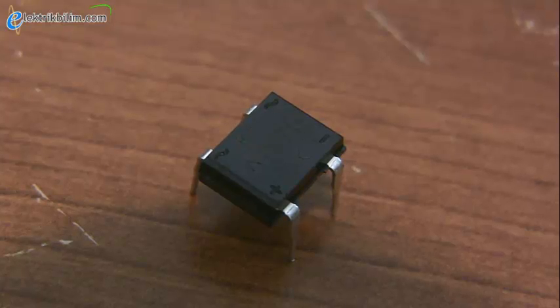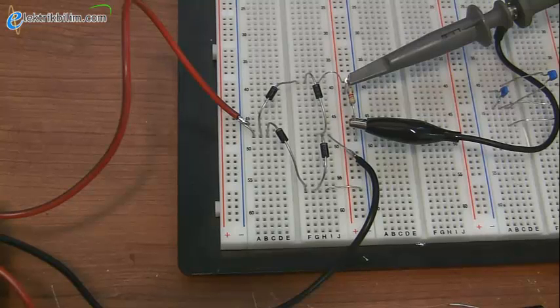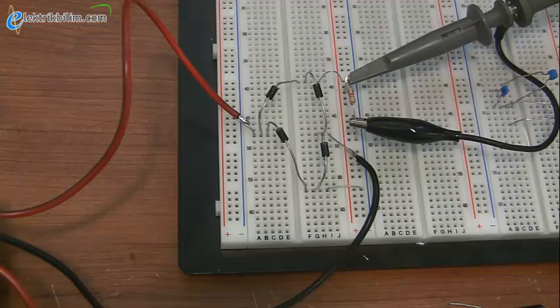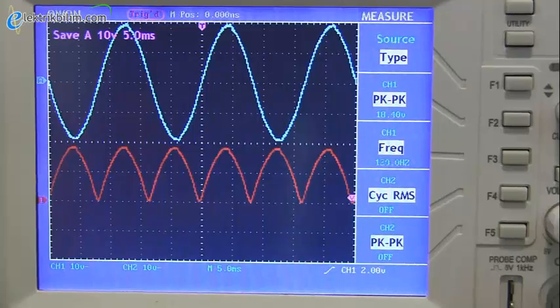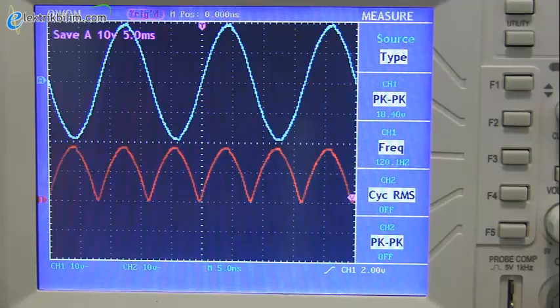You can buy pre-made bridge rectifiers, but it's also easy to build them yourself. Here's mine, connected to my transformer. I made it out of four 1N4007 diodes, and it cost me about four cents. Take a look at how the voltage used to go from positive to negative at 60 hertz, and now it never drops below zero volts, and instead we get these positive constant voltage bumps at 120 hertz.